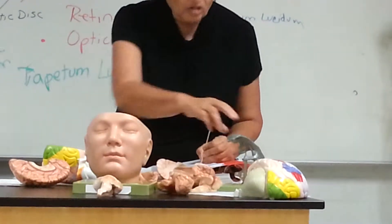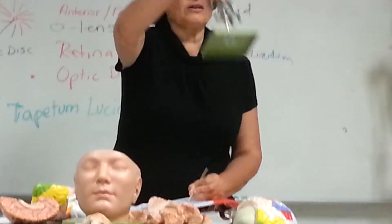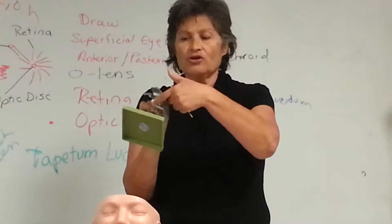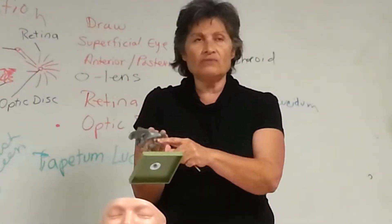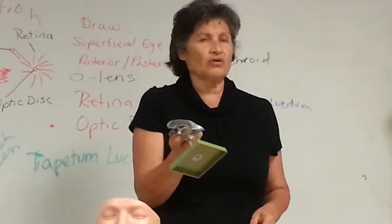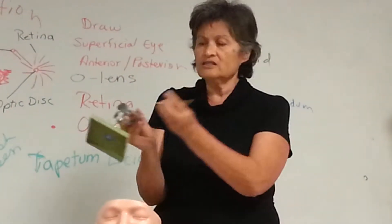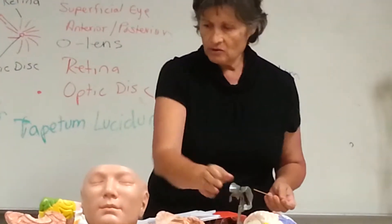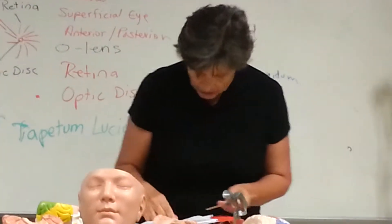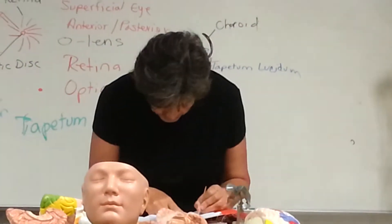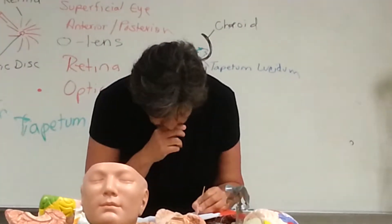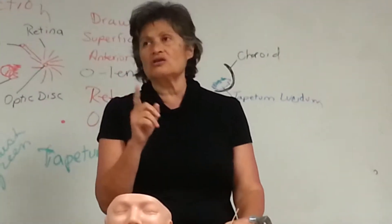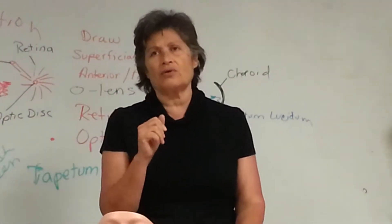And the ventricles — everyone knows the ventricles. You have two lateral, one third, and one fourth ventricle. And here's showing you the cerebral aqueduct, which I showed you earlier in the other models. The spinal cord — is there any question on the spinal cord?